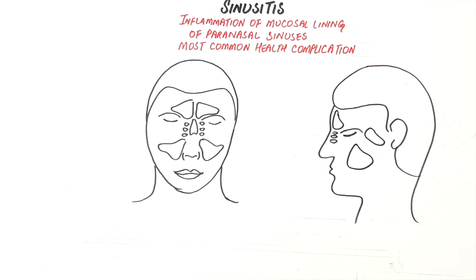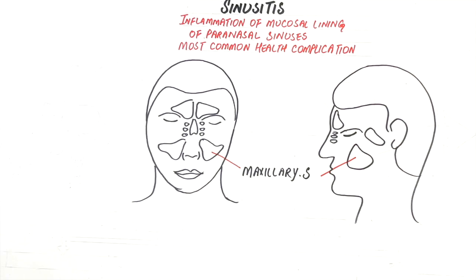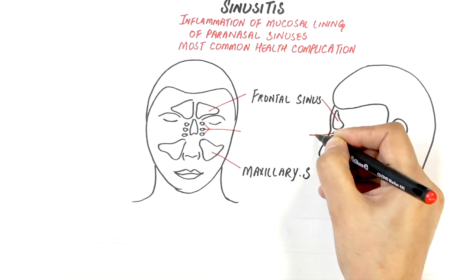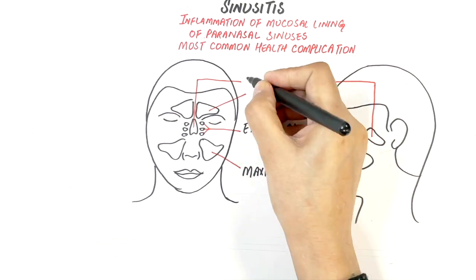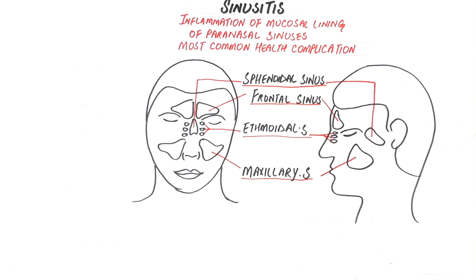Humans have four pairs of sinuses located at either side of the head. These are the paired maxillary, frontal, ethmoid, and sphenoid sinuses. The cheekbones hold the maxillary sinus, which is the largest sinus of all. The lower center of the forehead is where the frontal sinus is located. Between the eyes are the ethmoidal sinuses, and behind the nose are the sphenoidal sinuses.